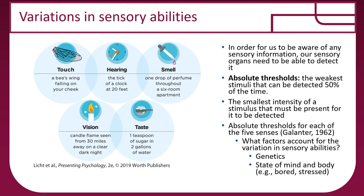We have quite a bit of variation in our sensory abilities. For us to be aware of sensory information, our sensory organs need to detect it. We have rods and cones in our eyes, hair cells in our ears, sensory neurons in our skin for touch, receptors in our nose for smell, and taste buds on our tongue for taste.